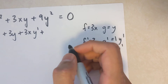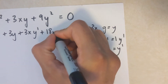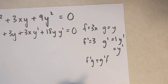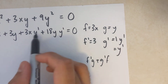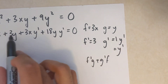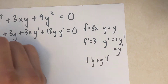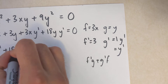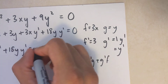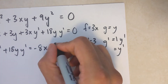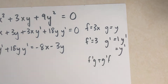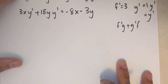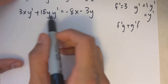The derivative of 9y² is 18y times y prime. Next, I'm going to keep the y prime terms on one side and move the other terms over, so I have 3xy prime plus 18yy prime equals negative 8x minus 3y.